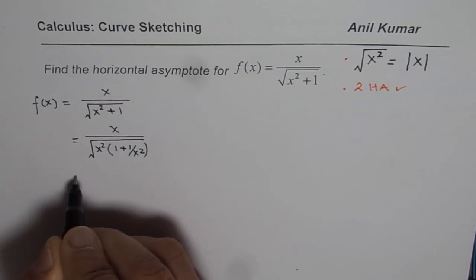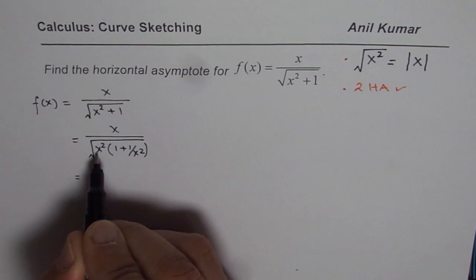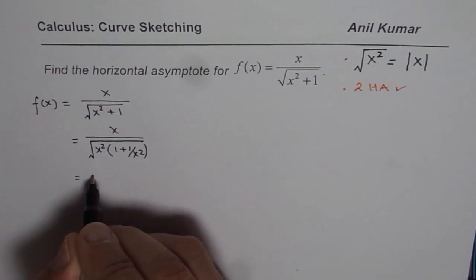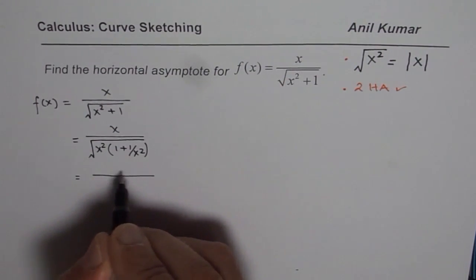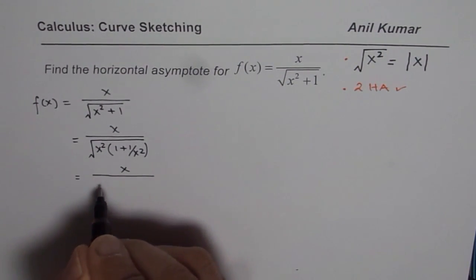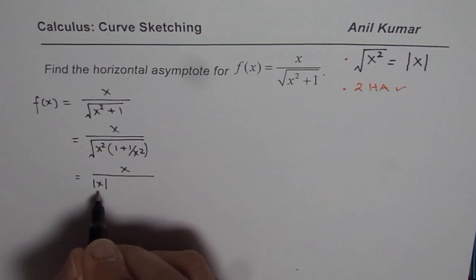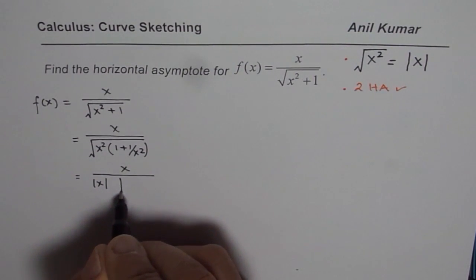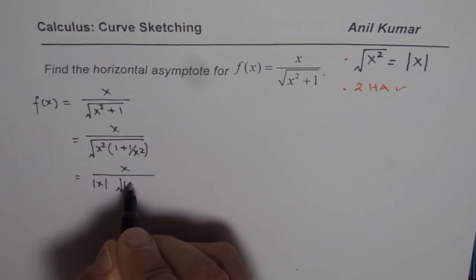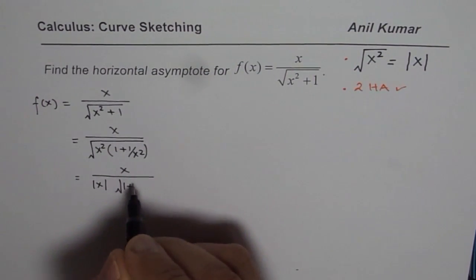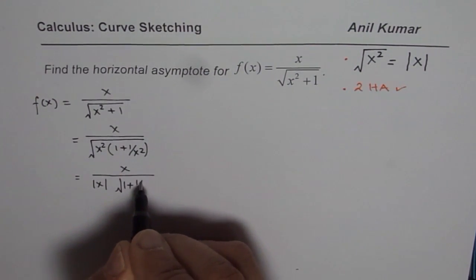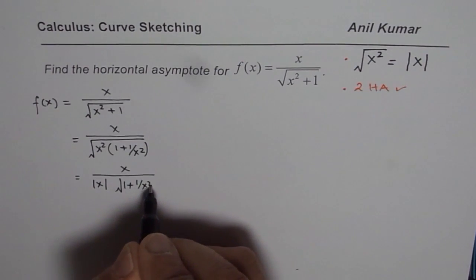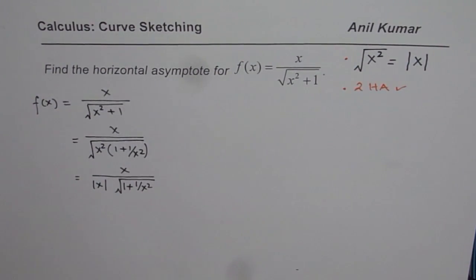Now as I said, what is square root of x squared? It is not x, it is absolute x. You can look into some of my videos on that — it will help you understand the concept. So we could write the expression with |x| in the denominator.